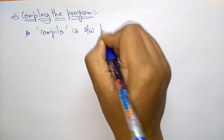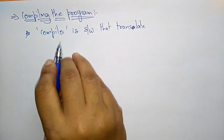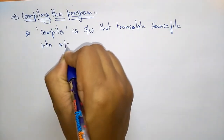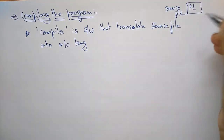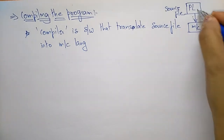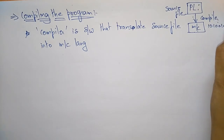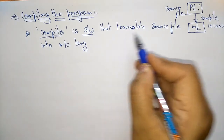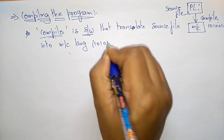A compiler is a software that is used to translate the source file into machine language. Whatever source file we have written is in the form of a programming language — it is English-like sentences. That has to be converted into machine language. To convert a programming language into machine language, you need a compiler. The compiler will convert that program in the form of ones and zeros.